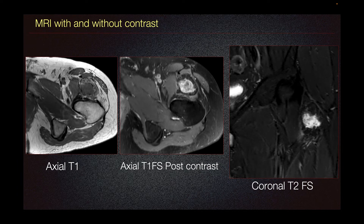This is an MRI with and without contrast of the same patient. MRI appearances of myositis ossificans change with the age of the lesion. In this patient, on the axial T1, we can see this heterogeneous mass in the anterior compartment of the proximal femur.